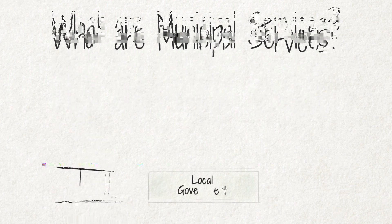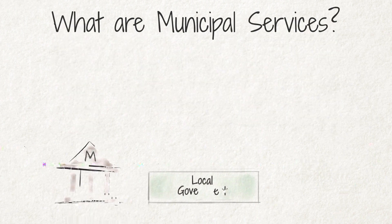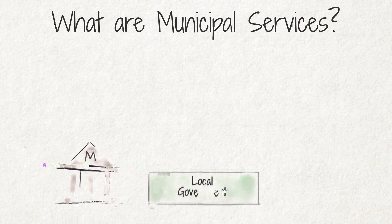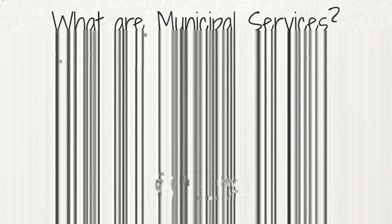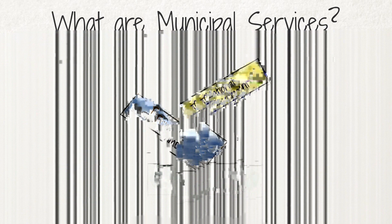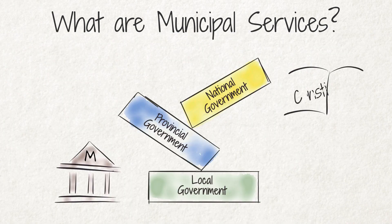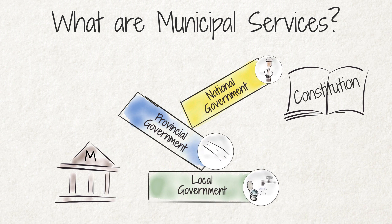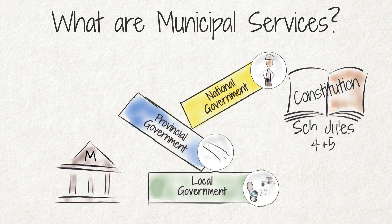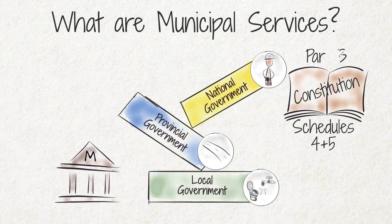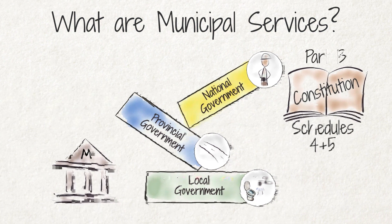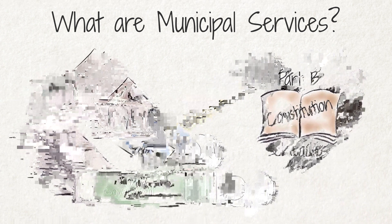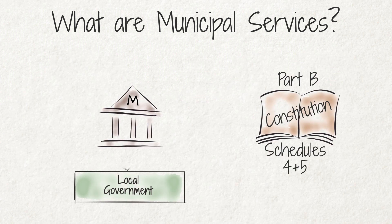Municipalities are part of the local sphere of government. The local sphere of government, together with the national and provincial spheres, make up the three spheres of government. The constitution sets out what specific services the different spheres of government must provide in schedules 4 and 5. Part B of those schedules sets out the local government services which affect our everyday lives directly.